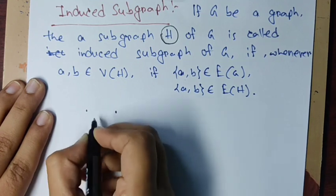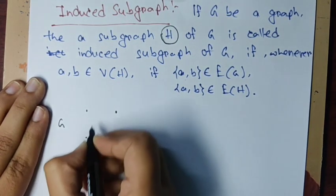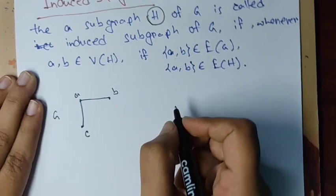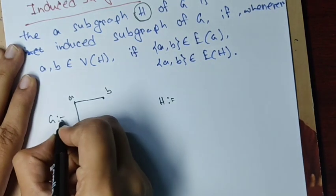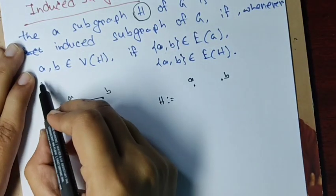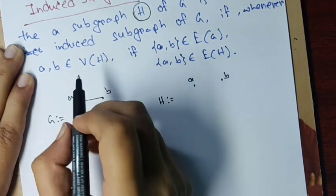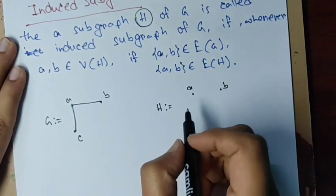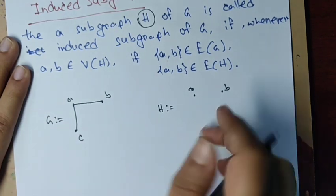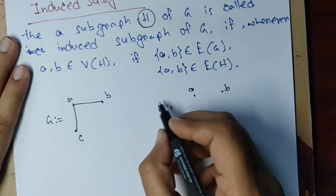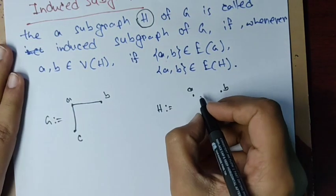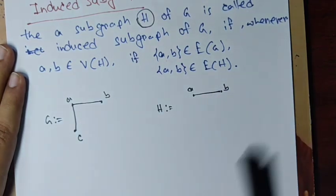Let us take a simple graph G on three vertices A, B, and C, and take a subgraph H1 with vertices A and B. The definition says that whenever two vertices A and B are in the vertex set of H, if the edge AB is in G then it must be in H. Since A and B are in H1 and the edge AB is in G, H1 is an induced subgraph only if this edge AB is also in H1.